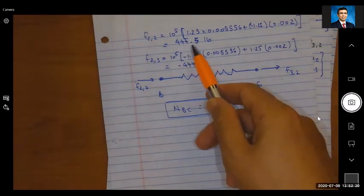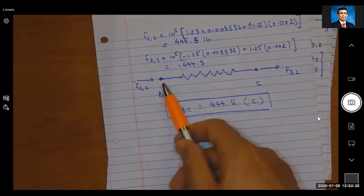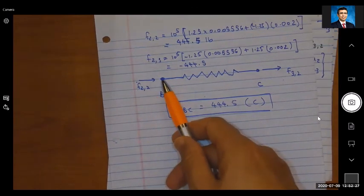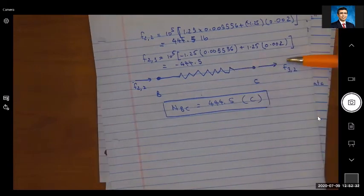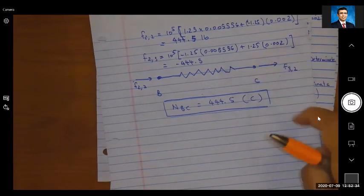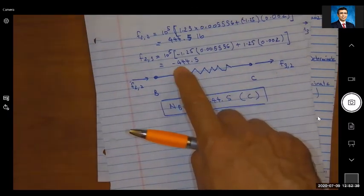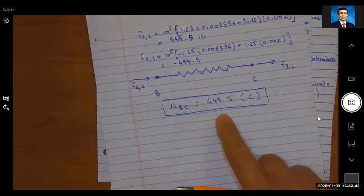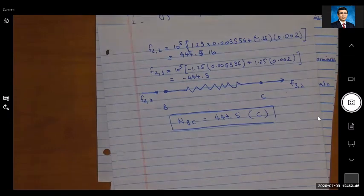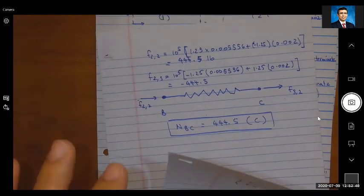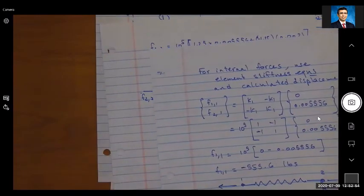You can apply element stiffness equation for BC, and when we solve, we get a plus 444.5 and a minus 444.5. If I show it here, a plus is a push and a negative here would also mean a push. What I'm showing here: both of them are positive, but for f32 I got a negative sign, so that means that BC is in compression of 445.5. I would like you to reflect on that and attempt to do homework problems.